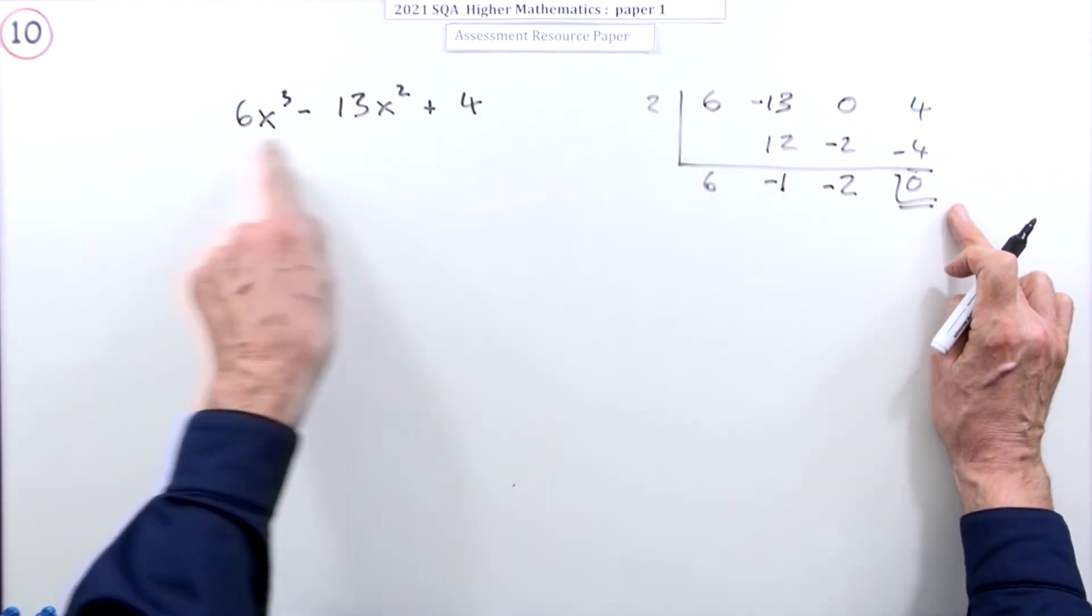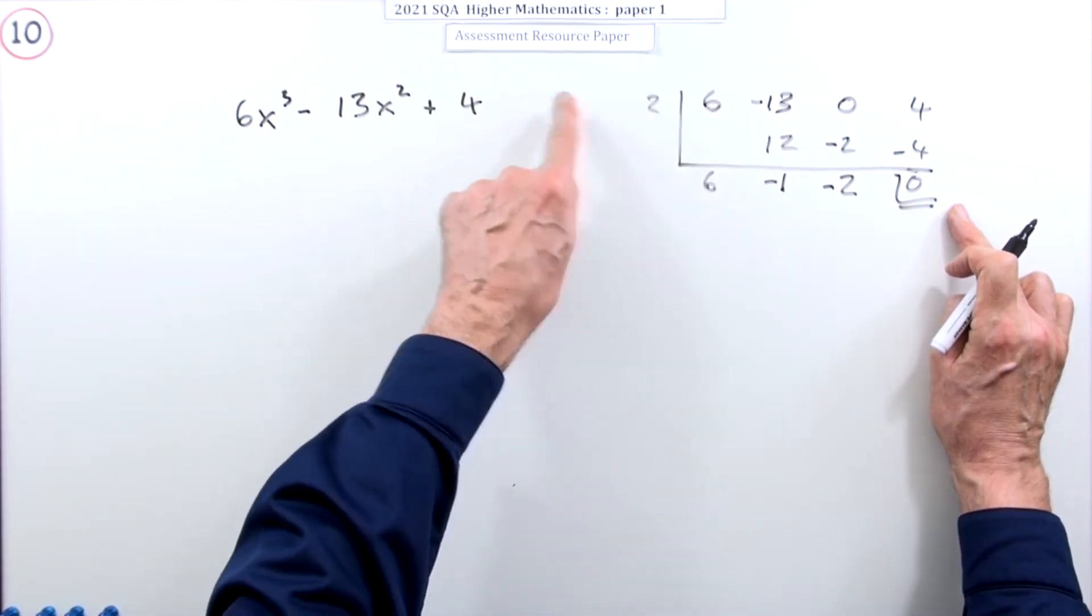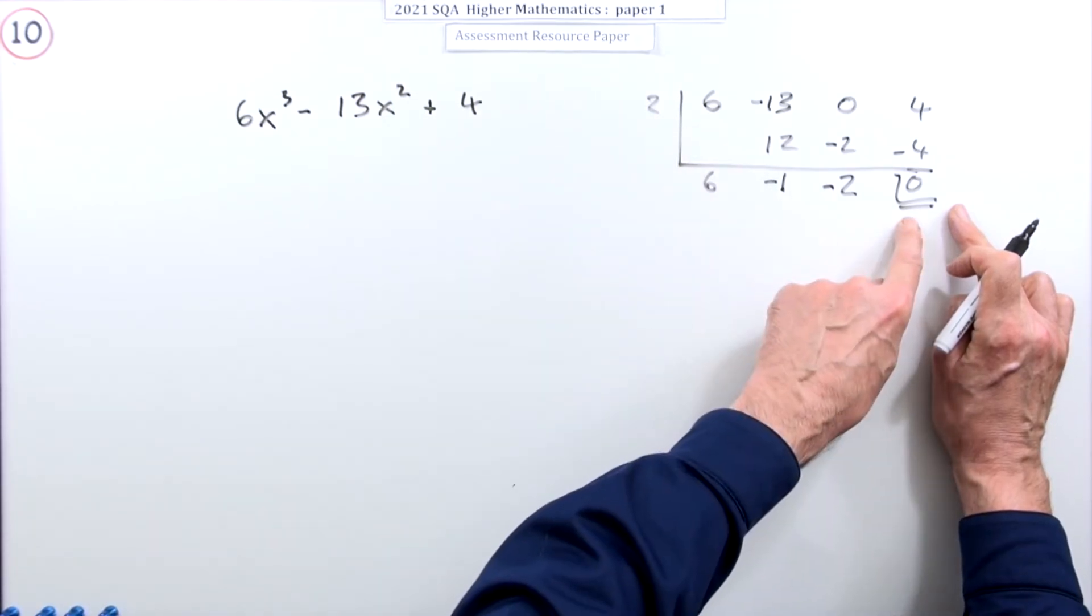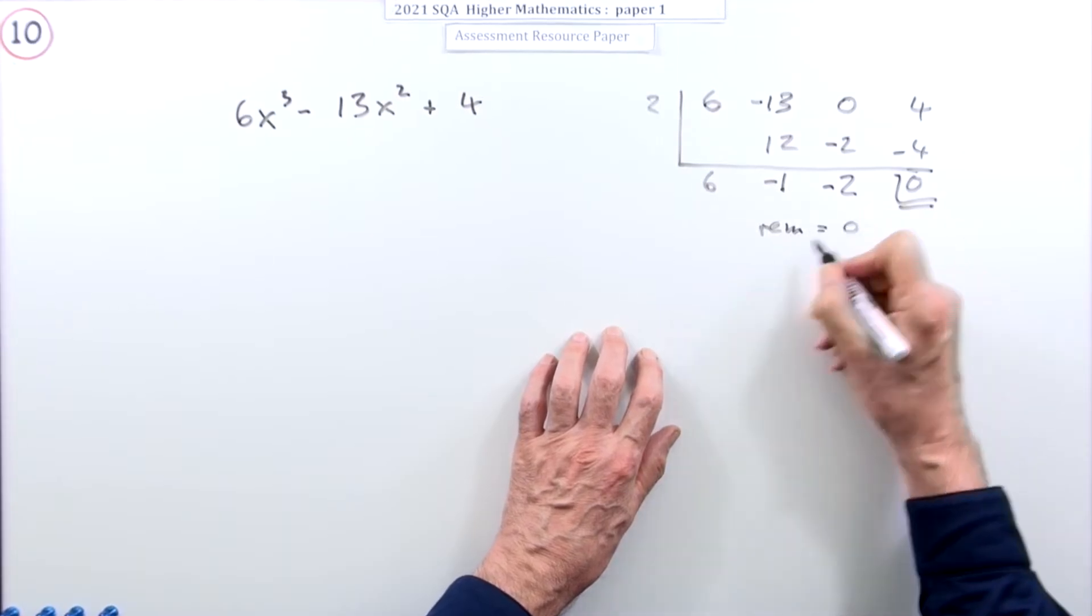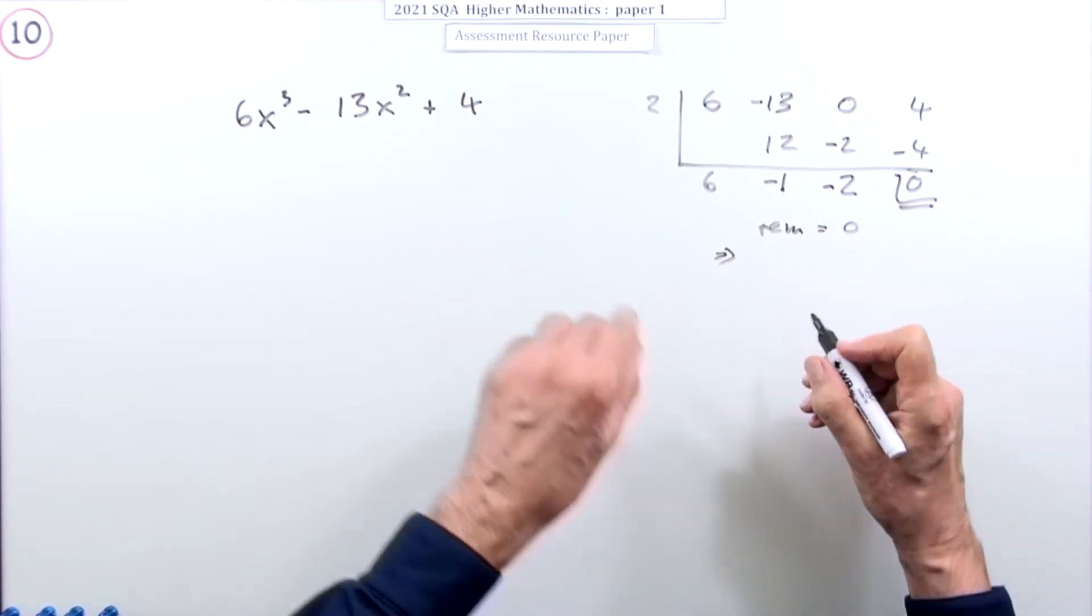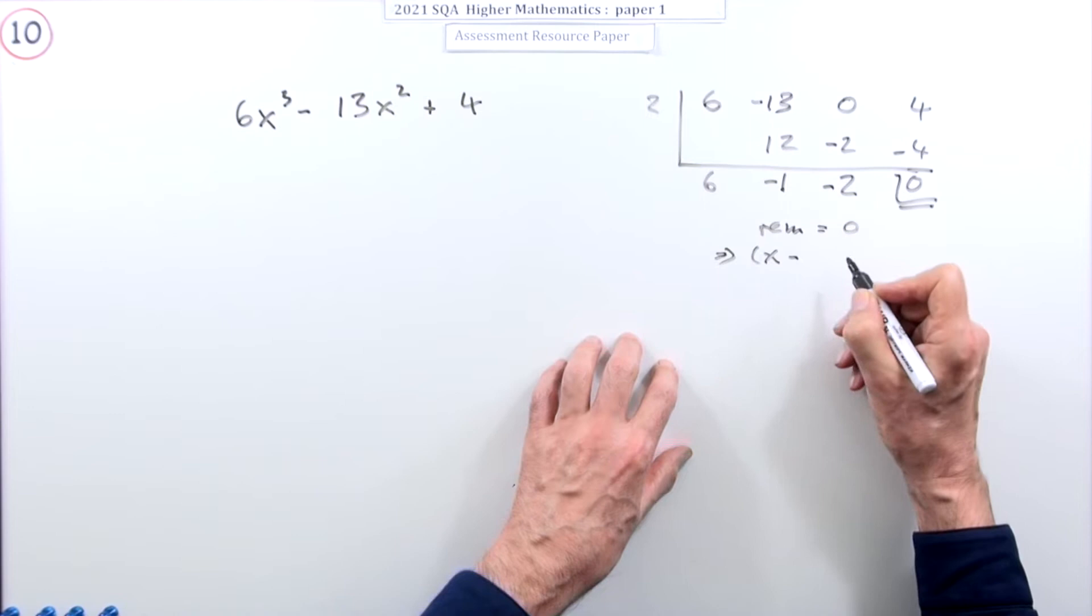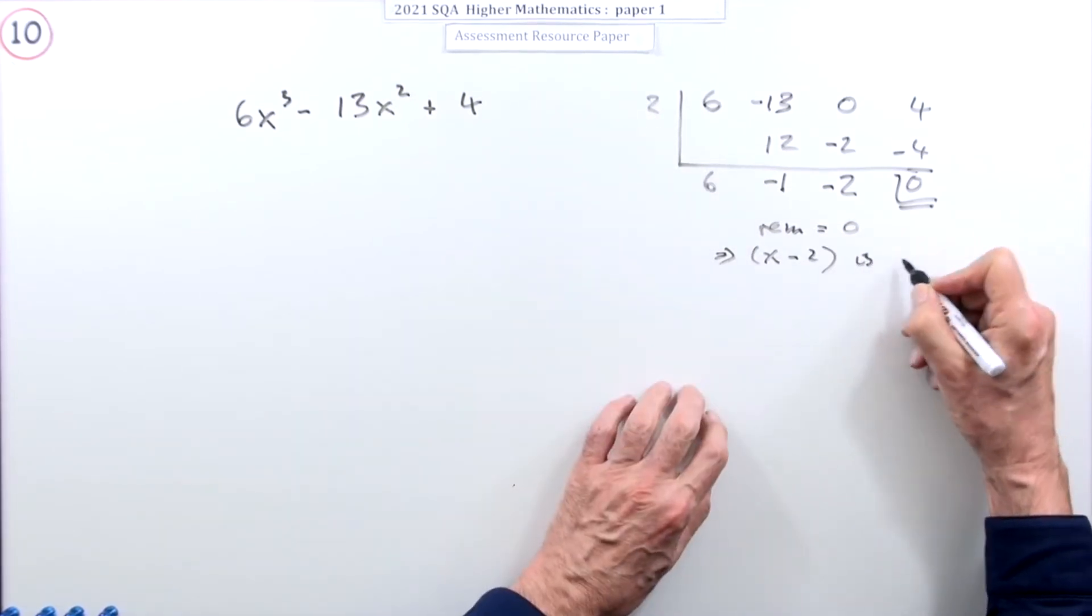And what this says is, if you were to divide this by the factor x minus whatever, this would be the remainder. So now I can say the remainder equals zero. Well that means it divided in exactly, that means that x minus whatever you put in is a factor.